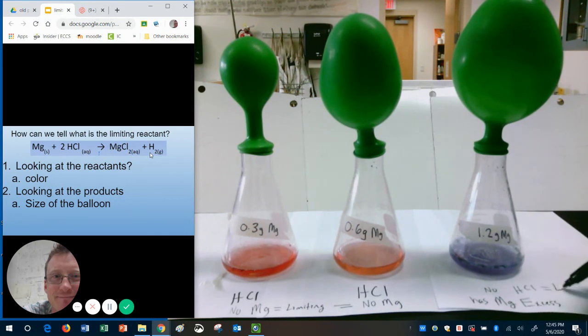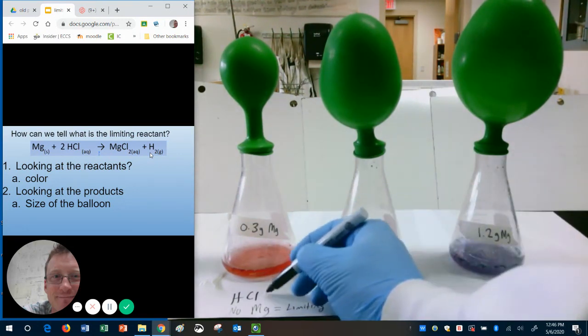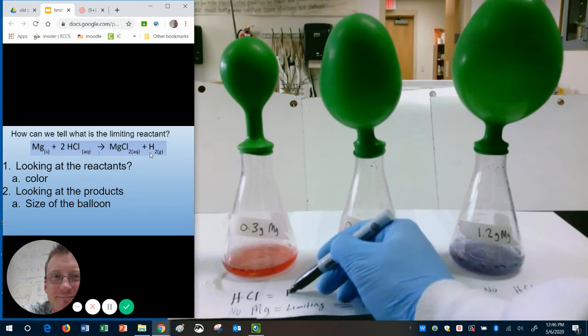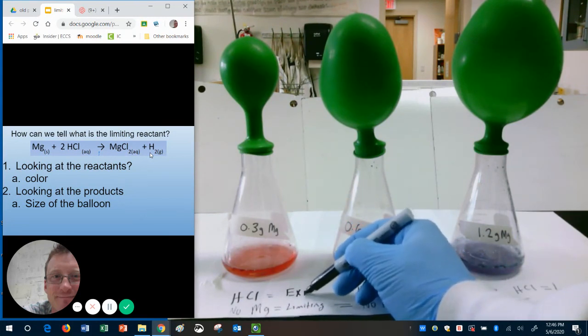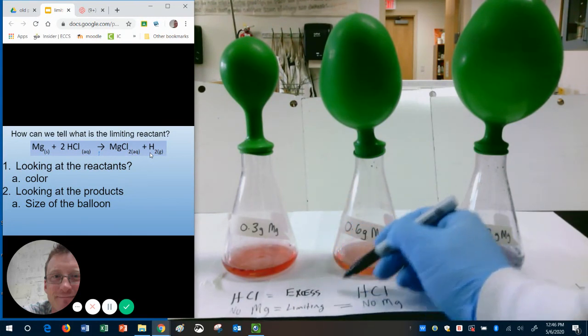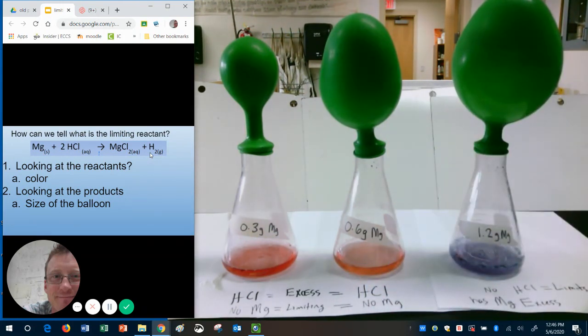And then the HCl is what limits. In the first ones, what must be the excess? It must be the HCl. Because there is HCl left over. That's what excess and that's what limiting means. So, there is an experiment that visually shows you how that happens.